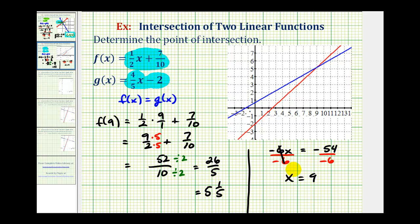Let's go ahead and leave it as 26/5, which means our point of intersection, or this point here, has an x-coordinate of 9 and a y-coordinate of 26/5, or 5 and 1/5.